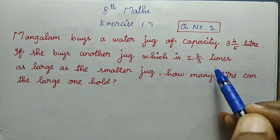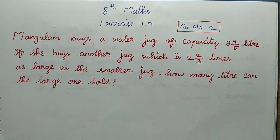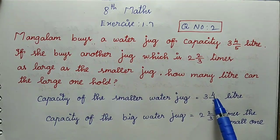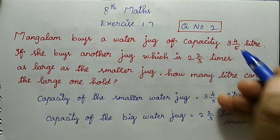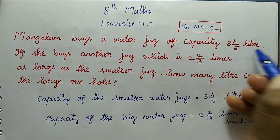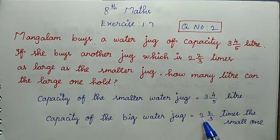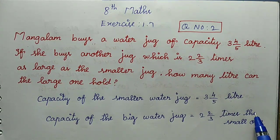Here we can find the capacity. Let's find the value of the given values. The capacity of the smaller water jug is 3 4/5 litres. Capacity of the larger jug is 2 2/3 times greater than the smaller one.